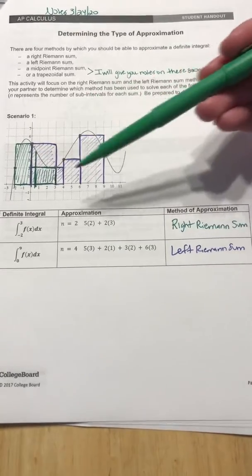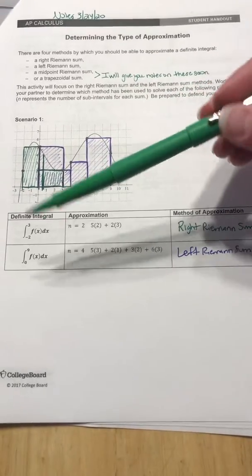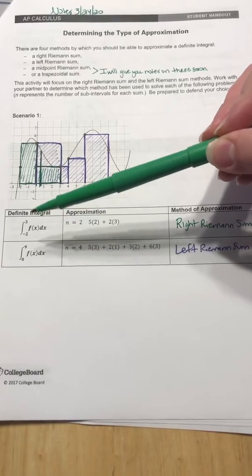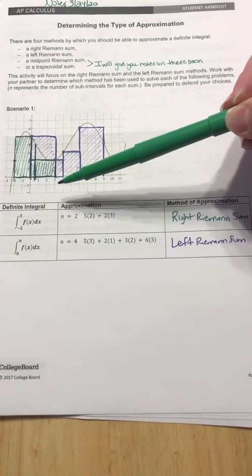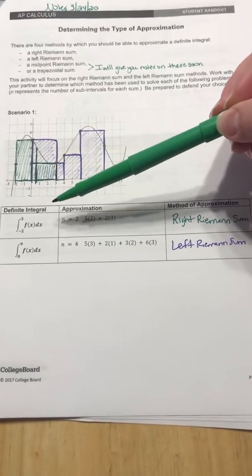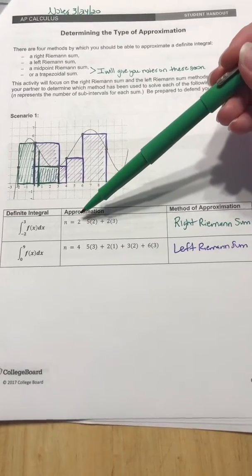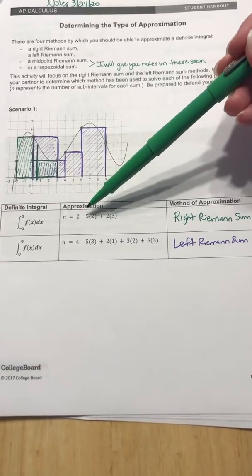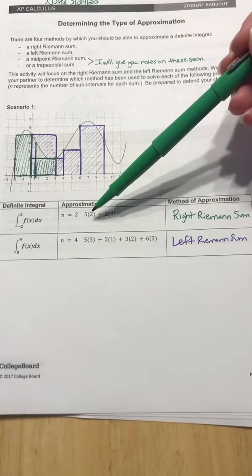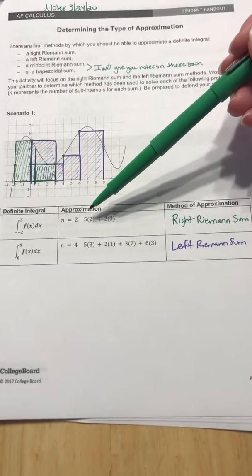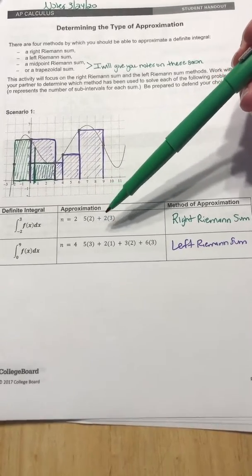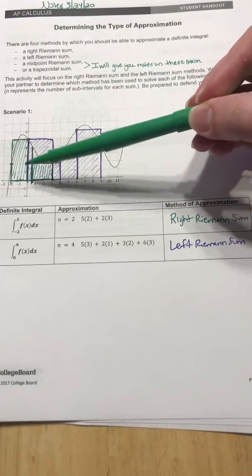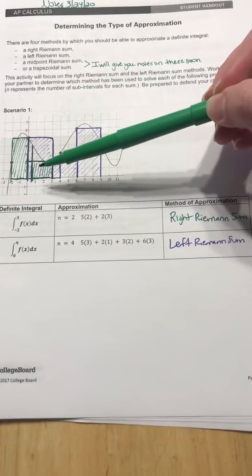All right, so scenario one gives us this function, and they want you to find the definite integral from negative two to three. So negative two to three is the green part that I did. And so they want you to do two sub-intervals. They went ahead and told you they had five times two plus two times three. So what they're doing is they're defining the areas of these rectangles.